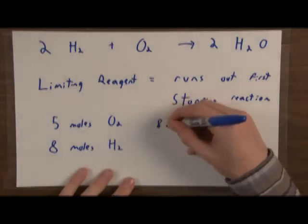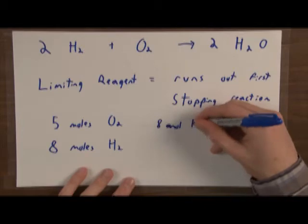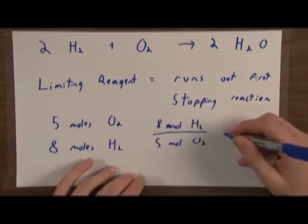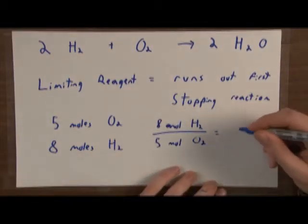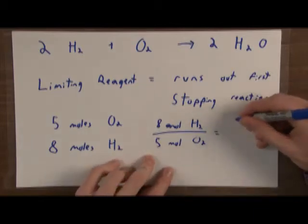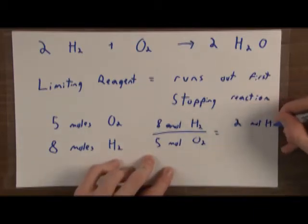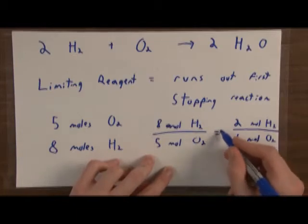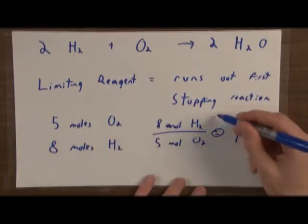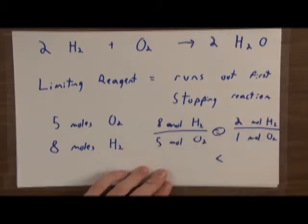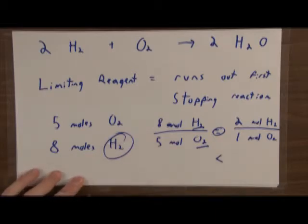Let's say we have eight moles of H2 and five moles of O2. We compare the ratio 8 over 5 to our molar ratio of 2 over 1. Eight over five is less than two over one, which means we have less hydrogen relative to oxygen than the ratio requires. So in this case, H2 is our limiting reagent.